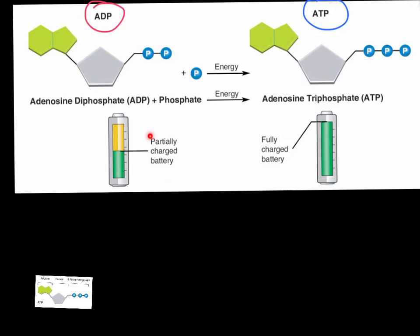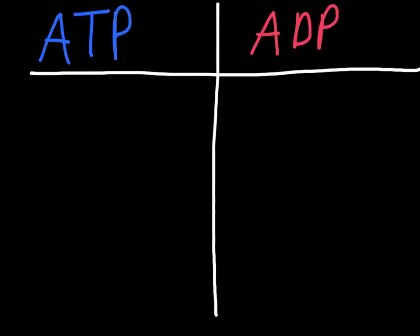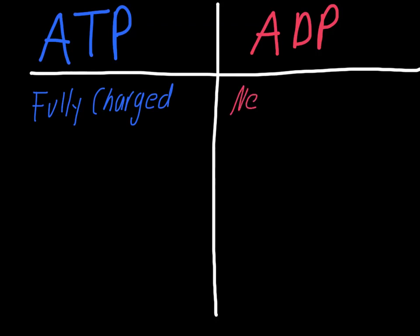The structure is something you should be aware of — adenine on this side, the ribose in the middle, and then the three phosphate groups at the end. To break this down simply: ATP is fully charged, meaning it can be used for energy as it currently is in the cell, while ADP needs charging. This is part of what happens in the processes of photosynthesis and respiration.